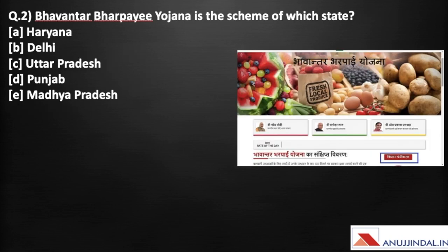Moving on — Bhavantar Bharpai Yojana is the scheme of which state? For those who do not know Hindi: 'Bhavantar' means difference and 'Bharpai' means compensation. This scheme aims to compensate farmers if they get a lower price than the price set by the government in markets for their crops.